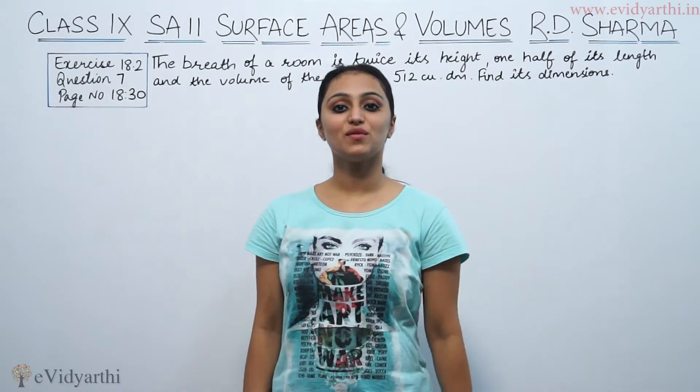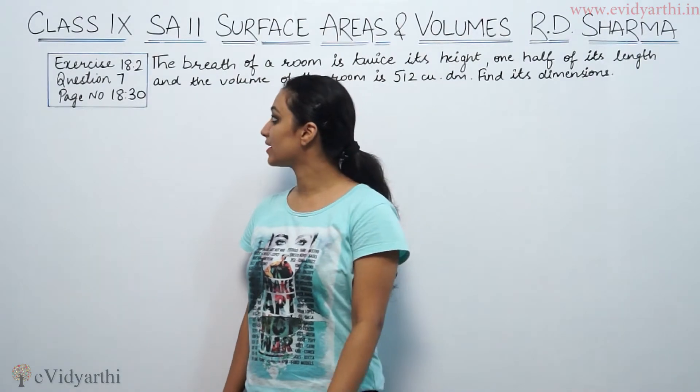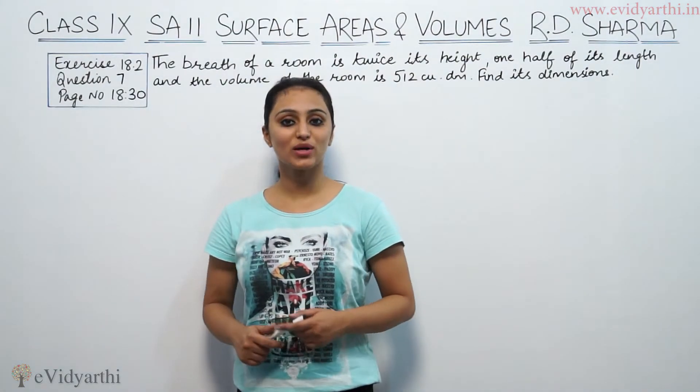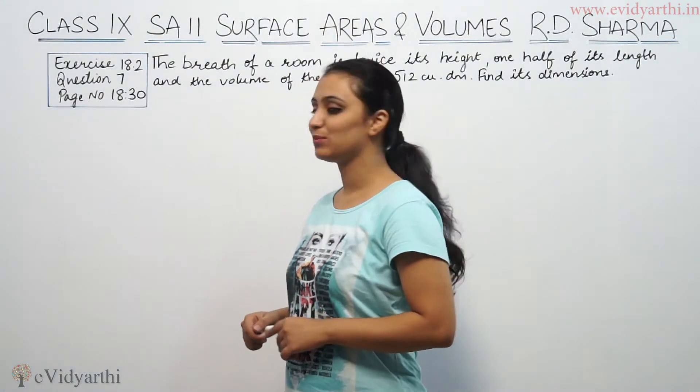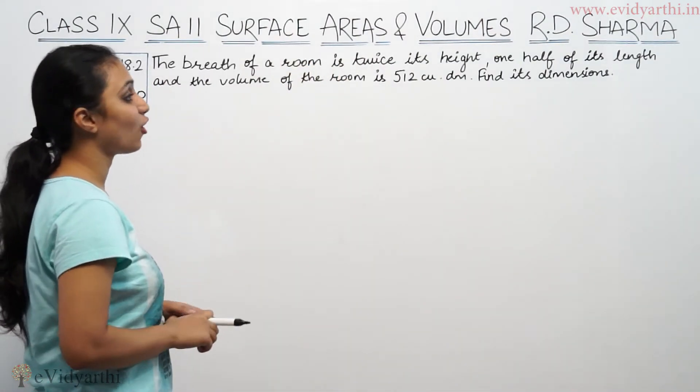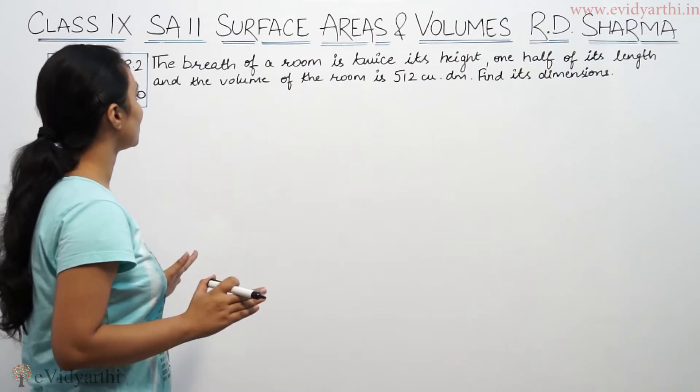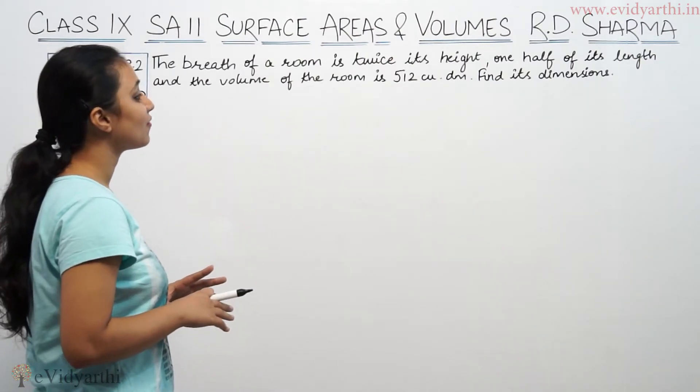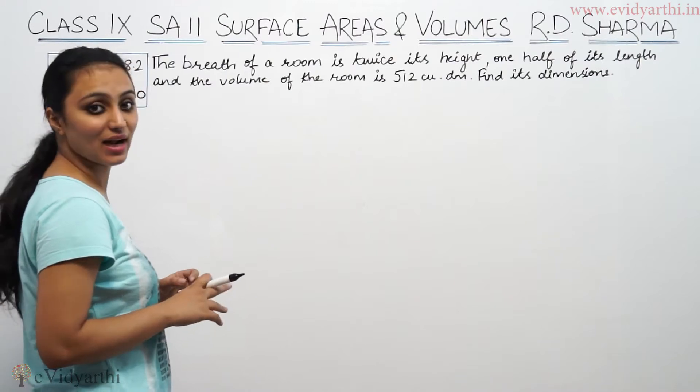Hi, this is Khushbu with another question of surface areas and volumes. This is question number 7 from exercise 18.2 of RD Sharma page 18.30. It says the breadth of a room is twice its height and one half of its length, and the volume of the room is 512 cubic decimeters. Find its dimensions.